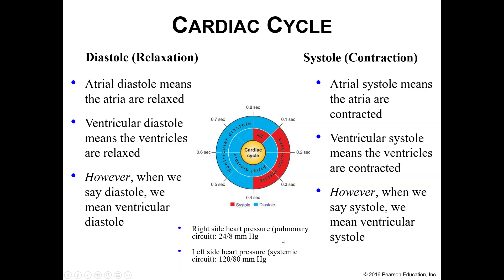We also need to keep in mind the pressures within the right and left sides of the heart. The right side has a much lower pressure than the left side. The right atrium and ventricle are moving blood out to your pulmonary circuit — to your lungs, which are right next door — so you don't need very high pressure. About 24 over 8 is the normal pressure on the right side. The left side is different: the left atrium and ventricle pump blood out through your aorta to your entire body, which takes much more force. The pressure gets up to about 120 over 80, which you might recognize as the blood pressure doctors always want you to have.